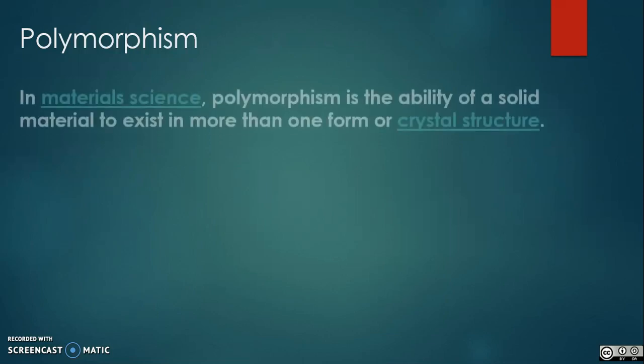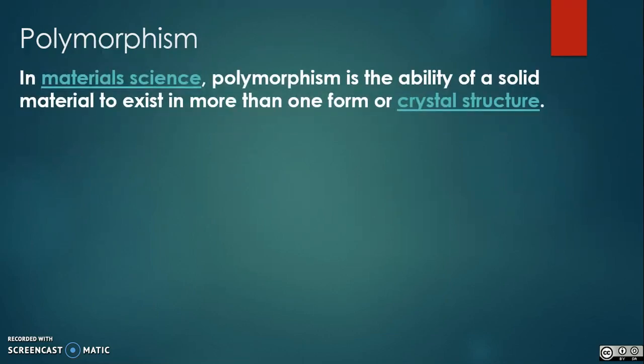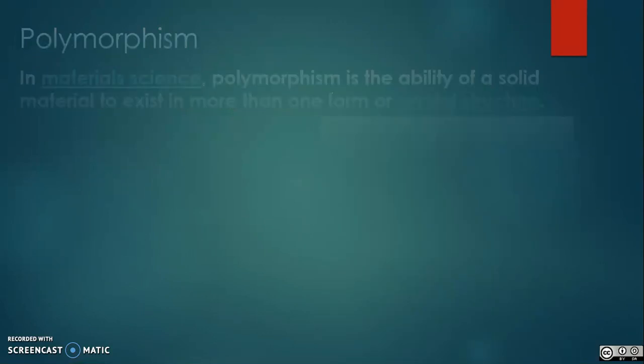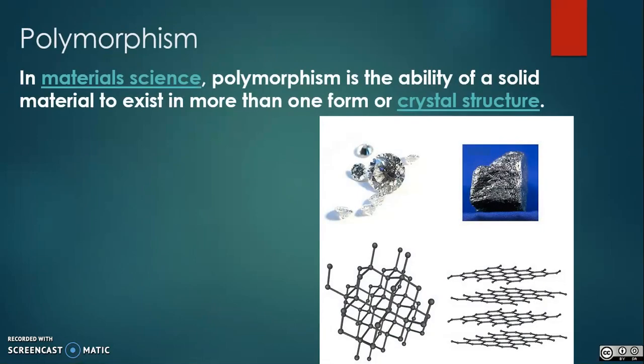Polymorphism. Polymorphism can potentially be found in any crystalline material including polymers, minerals, and metals, and it is related to allotropy, which refers to chemical elements.